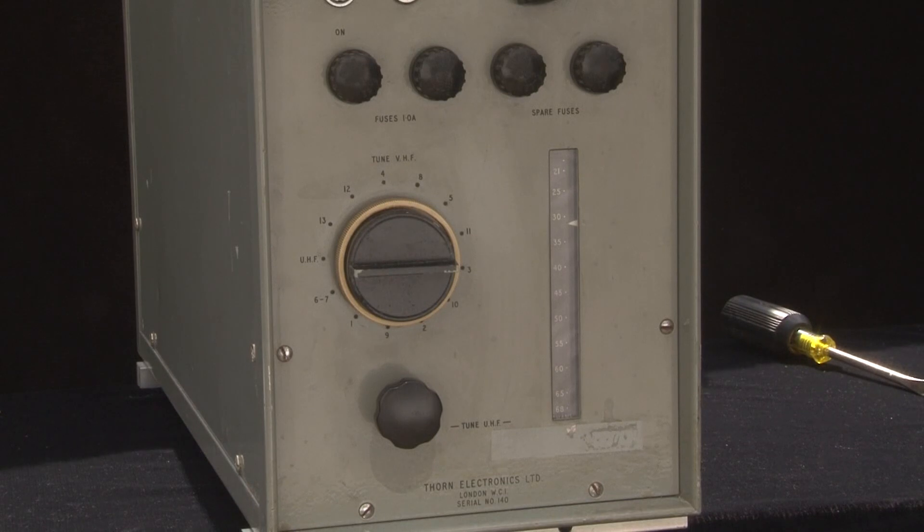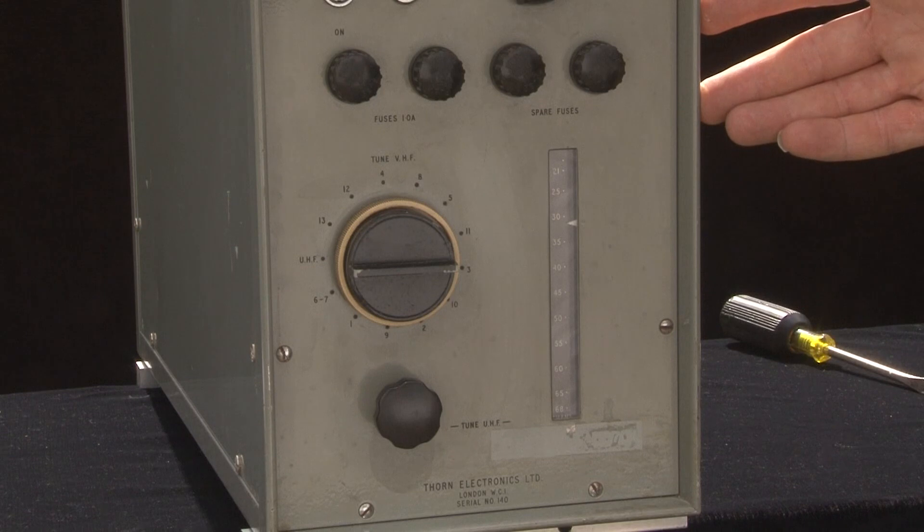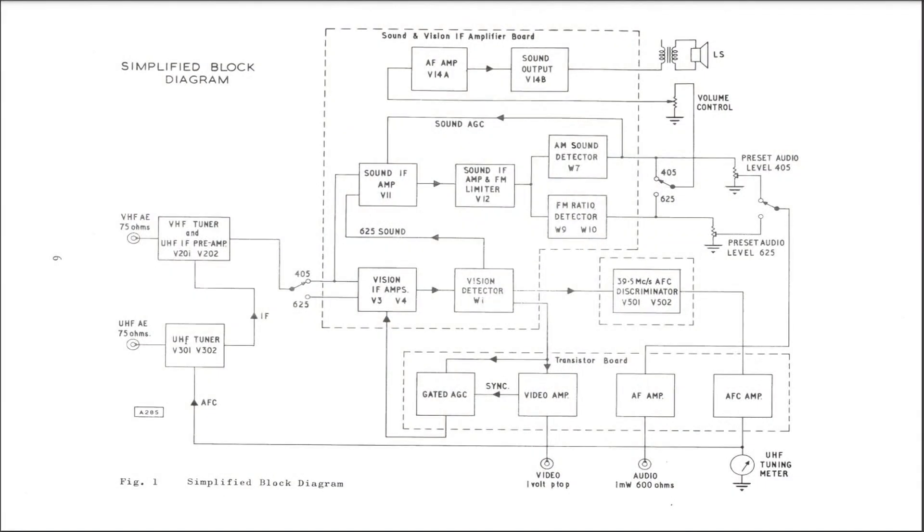So, immediately, the fleet of outside broadcast vehicles had to cope with two standards, 405 line TV and 625 line TV. Consequently, the off-air receiver is necessarily rather more complicated. It has to cope with both bands.